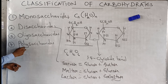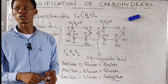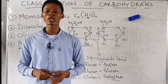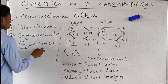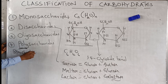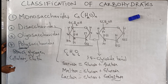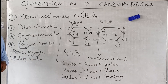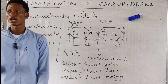Polysaccharides — poly means many. Polysaccharides have hundreds to thousands of sugar units linked together by glycosidic bonds. Examples of polysaccharides are starch, glycogen, cellulose, and chitin. That's the classification of carbohydrates based on sugar units.